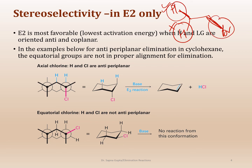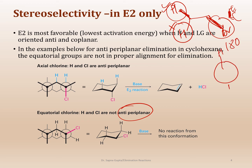When you have something that is anti-periplanar, that is how the elimination takes place. What does anti-periplanar mean? If you look at the leaving group from the side, the angle is actually 180°. So the hydrogen is here and the bromine is here - the angle is 180°. That is called anti-periplanar. Once you have something that is anti-periplanar, that is how elimination takes place. If you have hydrogens in other positions, those hydrogens are not eliminated. Only the anti-periplanar hydrogen is eliminated - that is stereoselectivity.